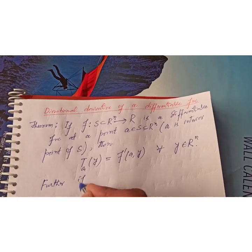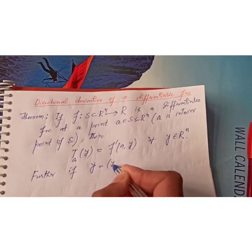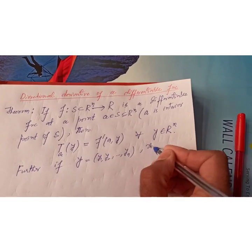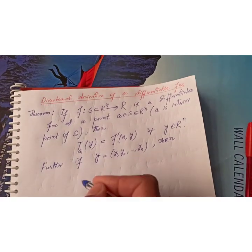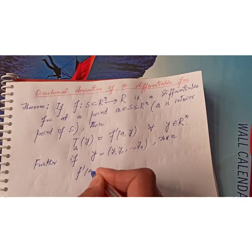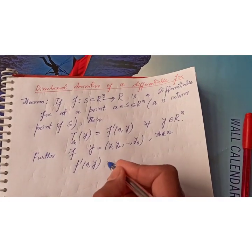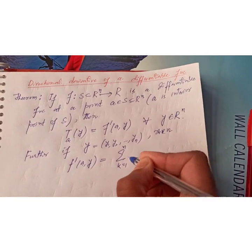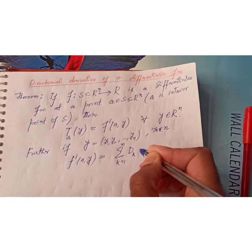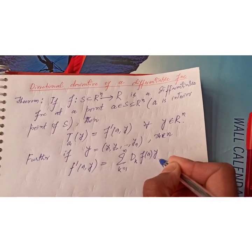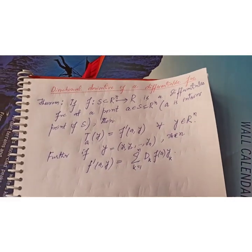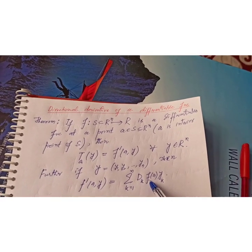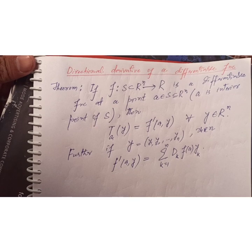If we have y equal to (y1, y2, ..., yn), then the directional derivative f'(a, y) is equal to the summation over k from 1 to n of D_k f(a) times y_k, where D_k f(a) is the partial derivative of f with respect to the k-th variable.